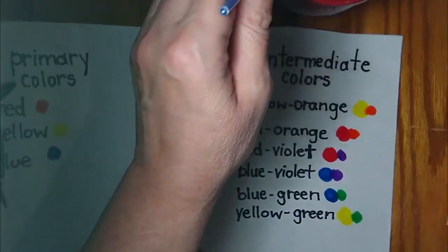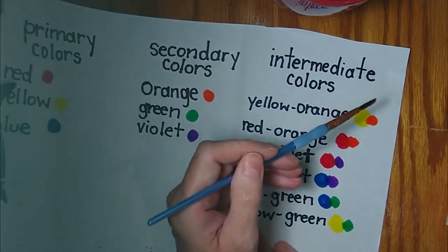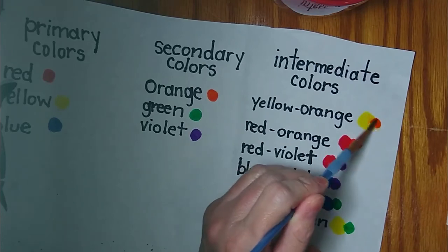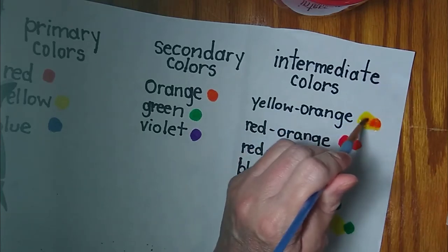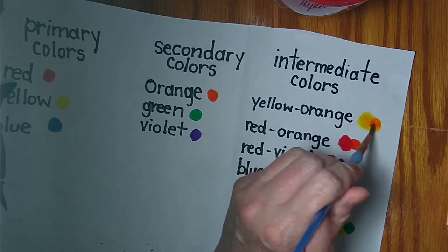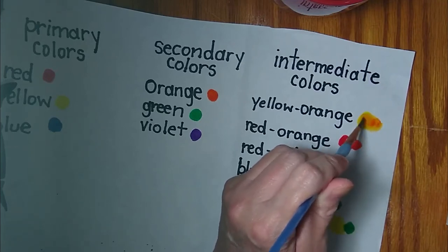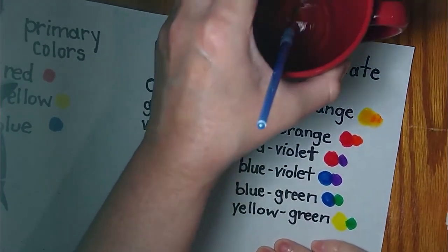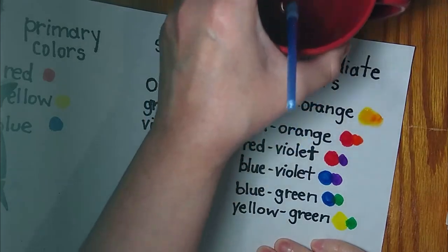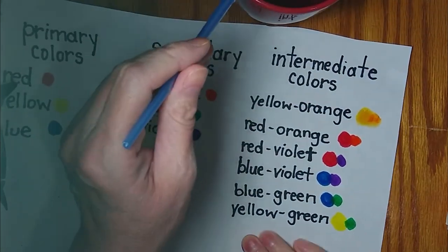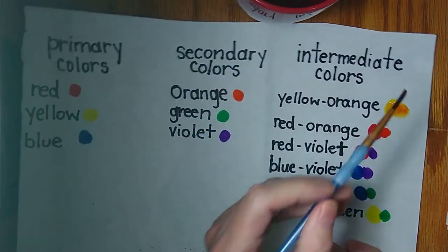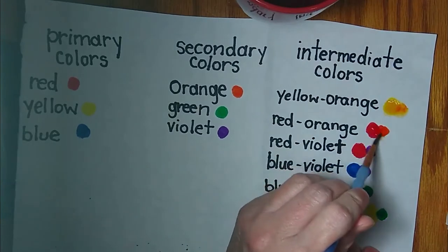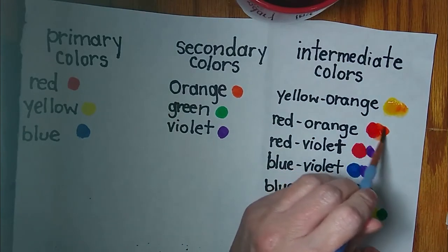Let's put some water on our yellow-orange, mix it together all very well. Now don't paint in the same spot too long or you'll get a hole in your paper. I'm going to wash my brush, remember bounce bounce gently. Then I'll mix together my red and my orange to make the intermediate color red-orange.